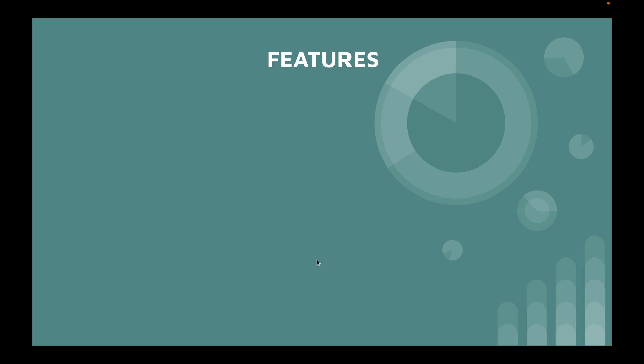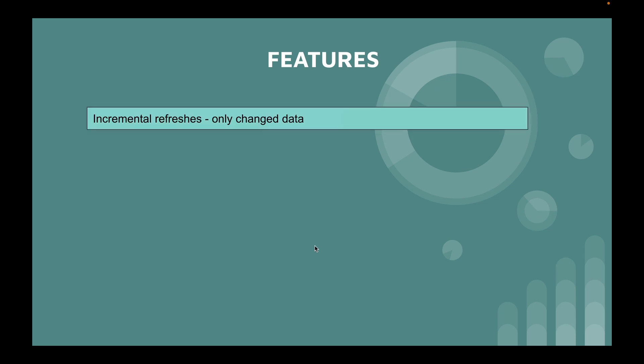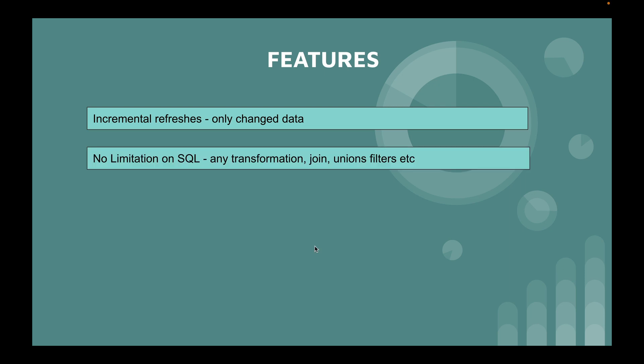The key features of dynamic tables include incremental refreshes — after the first full refresh, subsequent refreshes are incremental rather than full table refreshes. There are also no SQL limitations: you can use any transformation, joins, unions, or filters when creating a dynamic table, unlike the restrictions that existed with materialized views.